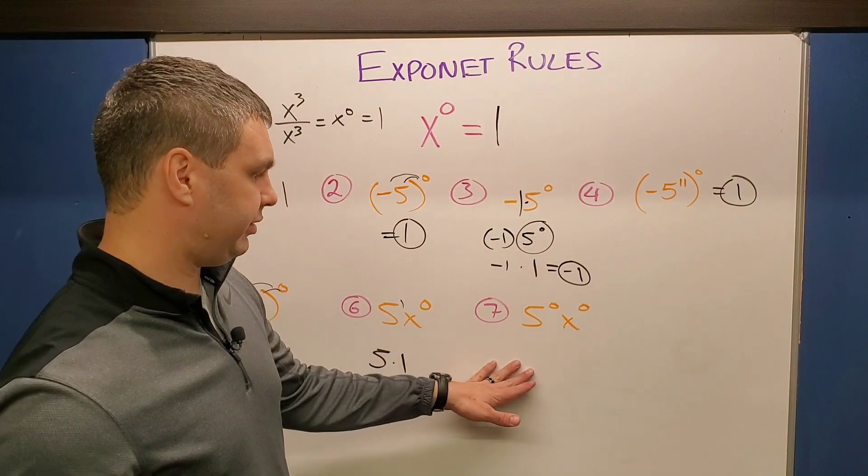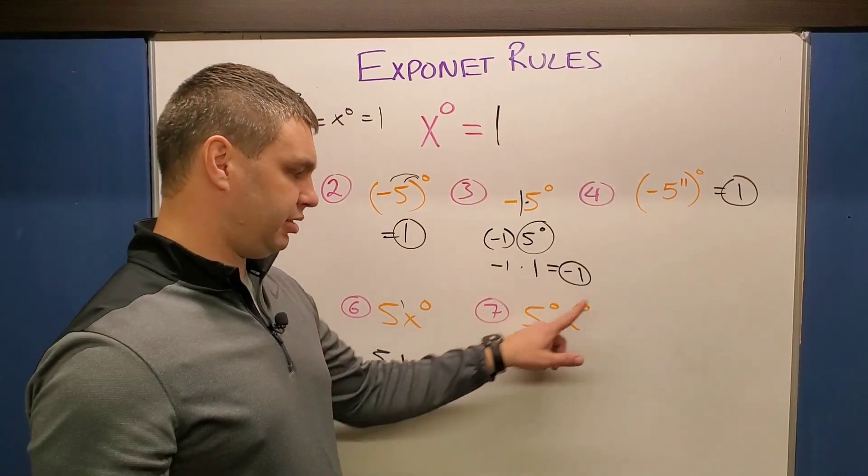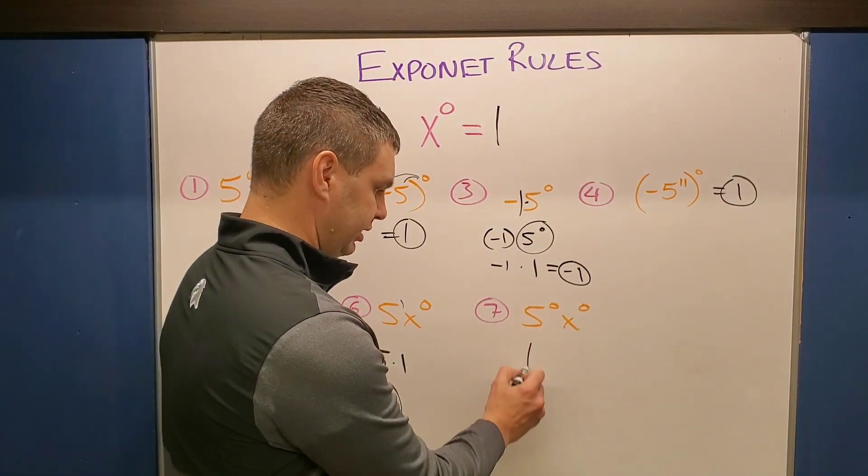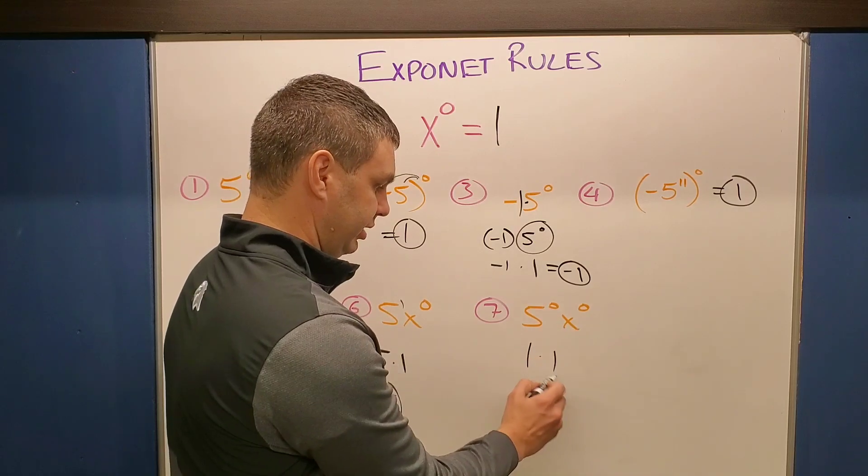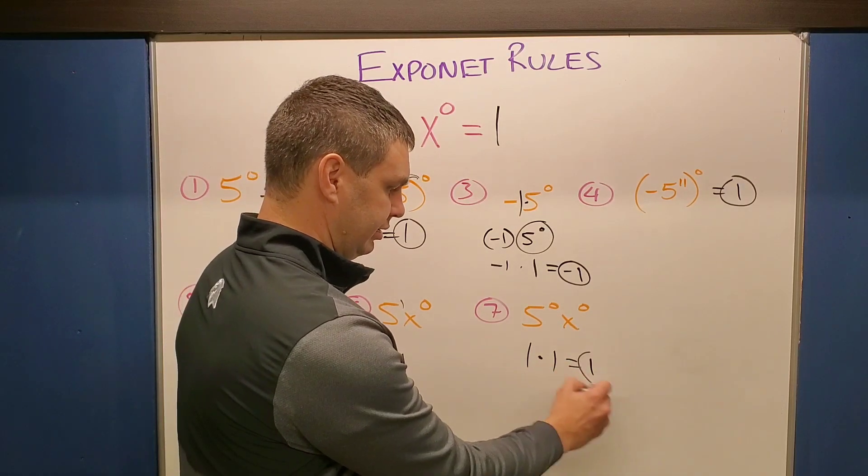And this last one that we have, number seven, anything to zero power is one. So this is going to be one times, that's also going to be one, one times one is one.